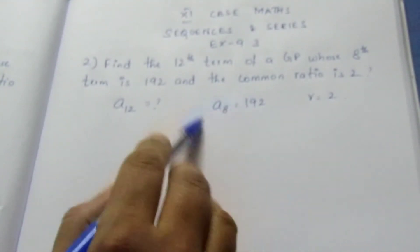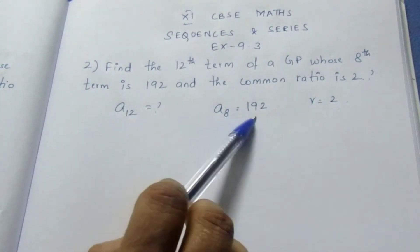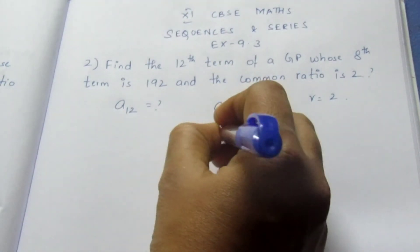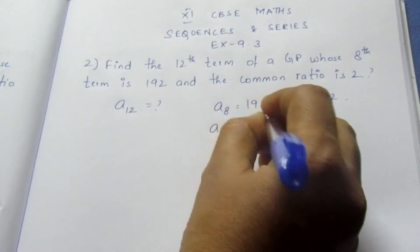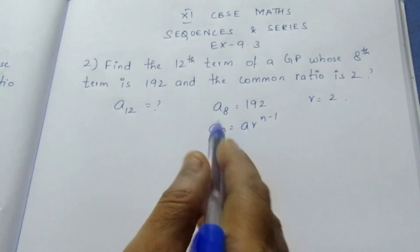Whenever we deal with formulas, if we know the An formula, we can substitute with what's given. The An formula for a GP is An = A × R^(n-1). The formula for the nth term is An equals A times R to the power n minus 1.